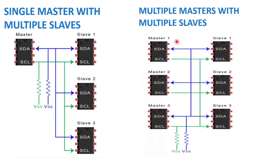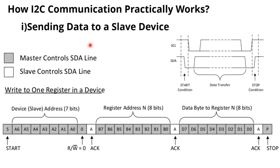When there are multiple masters, conflicts may occur during data transfer. To handle this, we should check the SDA line before initiating communication: when the SDA line is high, we can initiate communication; if the SDA line is low, that means someone else is using the network and we should wait. In single-master configuration there is no such conflict — the master simply initiates communication.